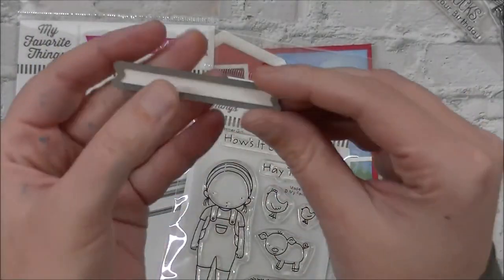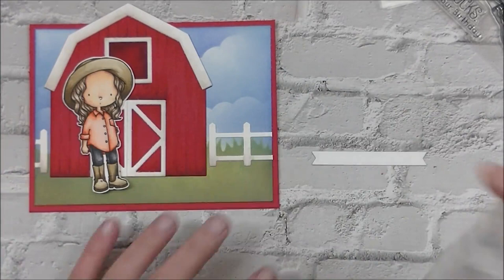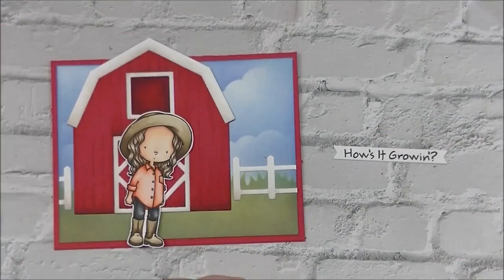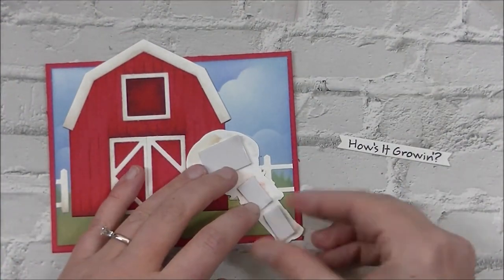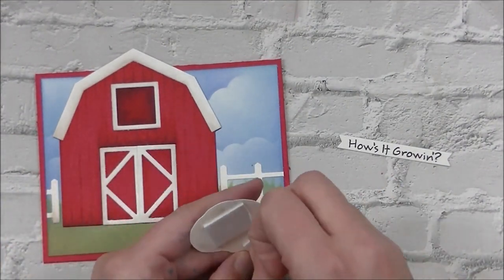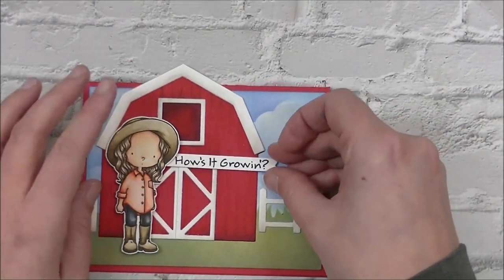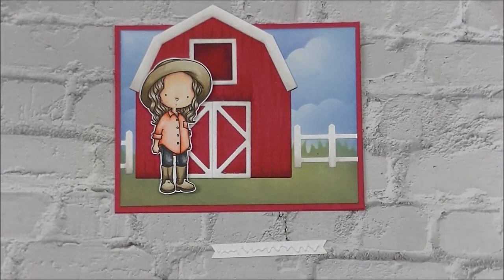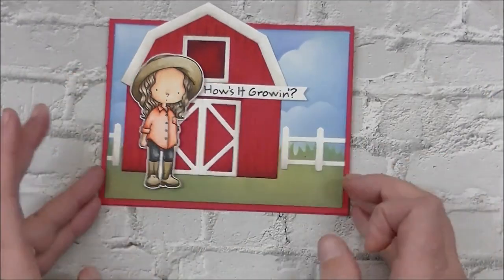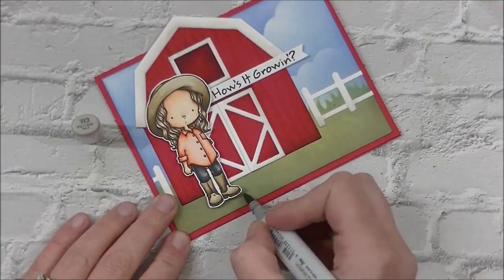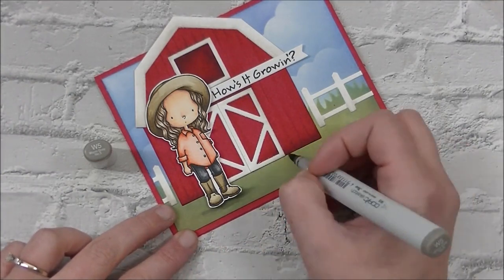And now I have the Skinny Strips Die. I'm going to cut out the little banner. Then I'm going to use the How's It Growing stamp set from the Pure Innocence Farmer Girl collection. We're going to pop our little lady up on some foam dots, adhere down the How's It Growing banner using that liquid adhesive. Then we're going to pull out some W markers. I think I used W5 and W3 because the W3 wasn't quite dark enough. Just to add a little bit of shading underneath of her feet and around the barn and underneath of the fence posts.